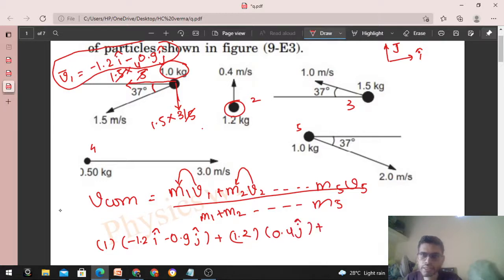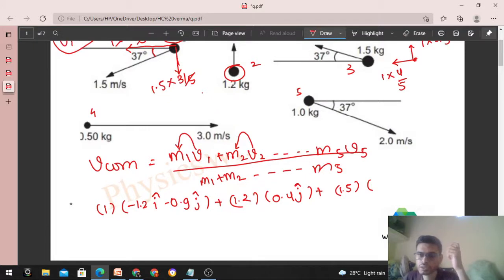Plus m3 is 1.5 and its velocity will be in the horizontal direction backward, right? So that will be 1 cos 37 which is 4 by 5, and upward will be 1 sin 37 which is 3 by 5. So 0.8, and this will be minus, right? The horizontal direction is minus i cap. So that will be minus 0.8 in i cap plus 0.6 in j cap. Right?